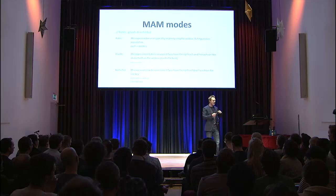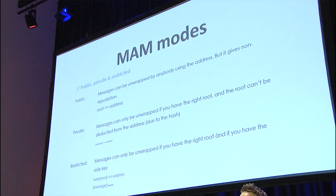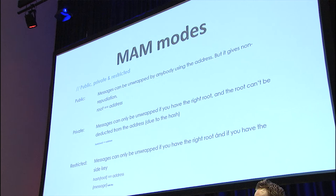Then you have the private mode, which is kind of the same, but it hashes the root you use to find that address. The hash of the root becomes the address, so you can't revert it back to the root. And you actually need that address to unwrap, or to get the data decoded, to get it back out of the Tangle. This makes sure that nobody can deduce the root out of the address.